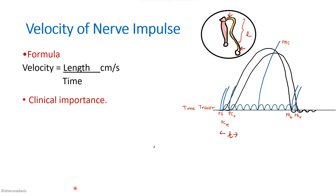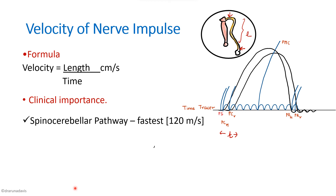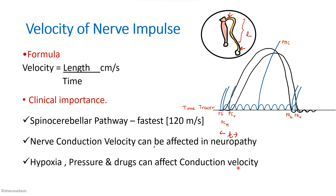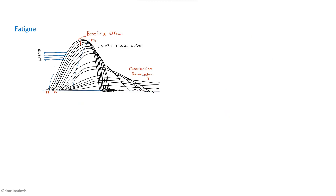The clinical importance of nerve impulse velocity: if transmission velocity is higher, we get more accurate results in a shorter time. The spinocerebellar pathway is the fastest, with nerve impulse velocity around 120 meters per second, enabling quick proprioceptive information. Nerve conduction velocity can be affected in peripheral neuropathies and can be used to diagnose them. The effects of hypoxia, pressure, and drugs like anesthetics on conduction velocity are also important applied aspects.